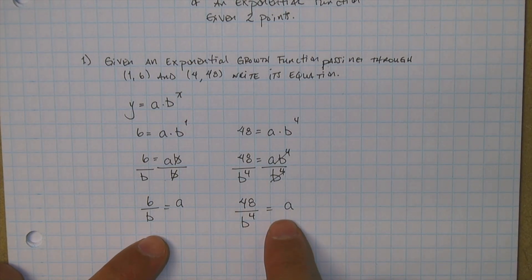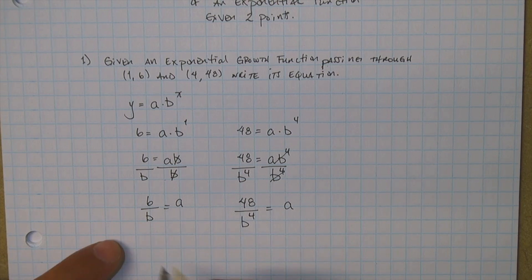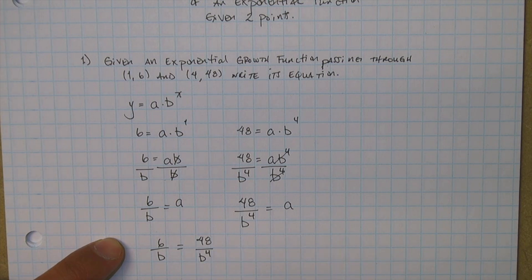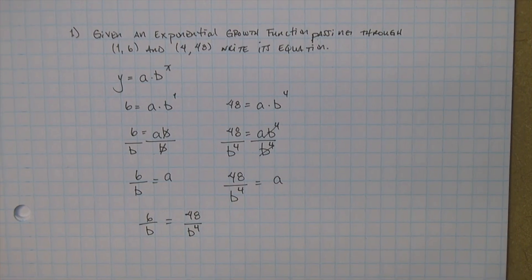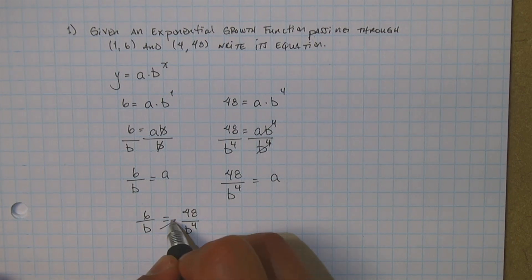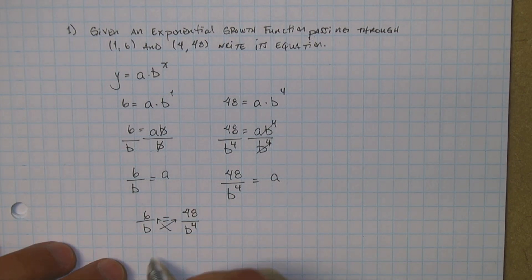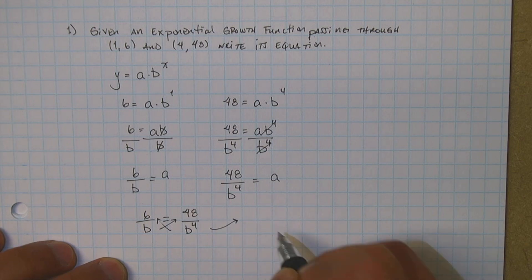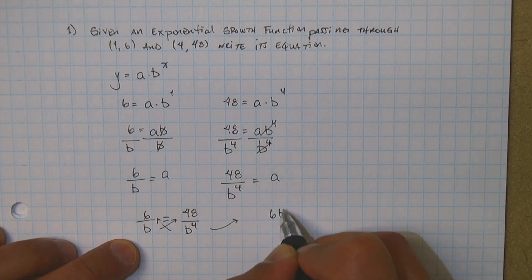And you notice how they both equal a, so I'm going to set them equal to each other. So I get 6 divided by b is equal to 48 divided by b to the fourth. Now I'm just going to go ahead and cross multiply. Bring them up to the top. So I'm going to write it over here. I will get 6b to the fourth is equal to 48b.